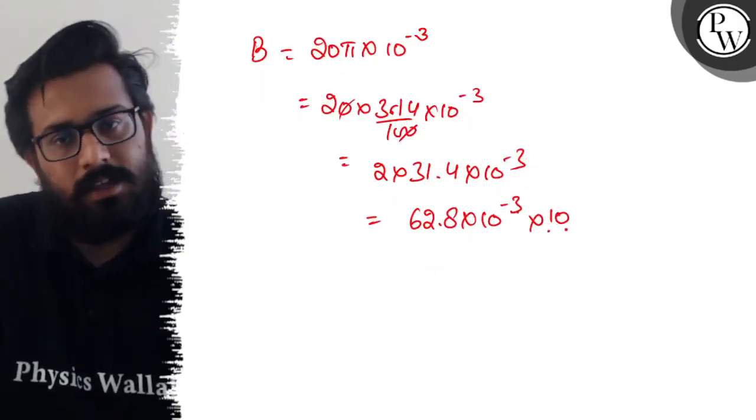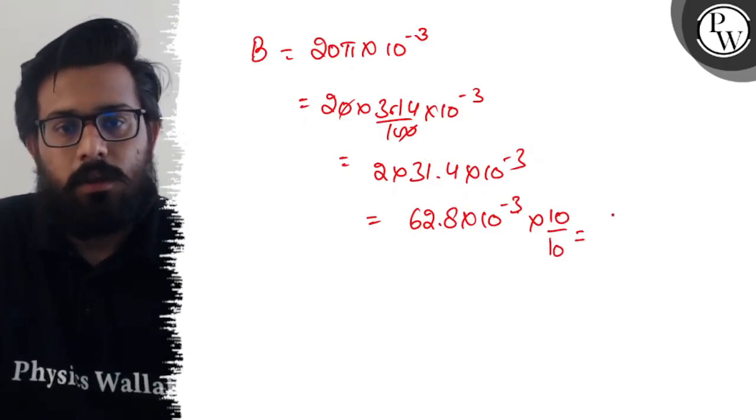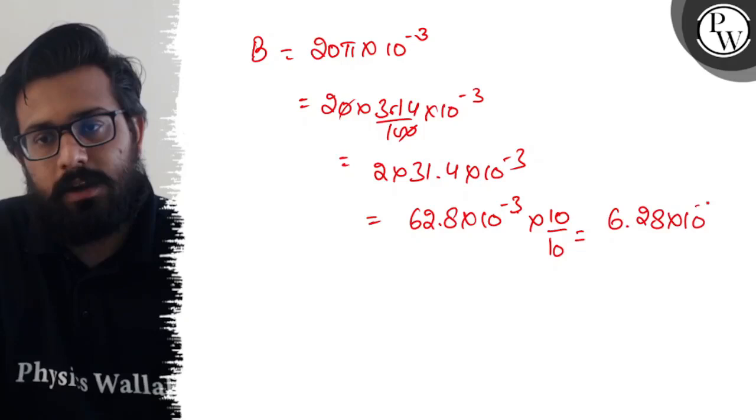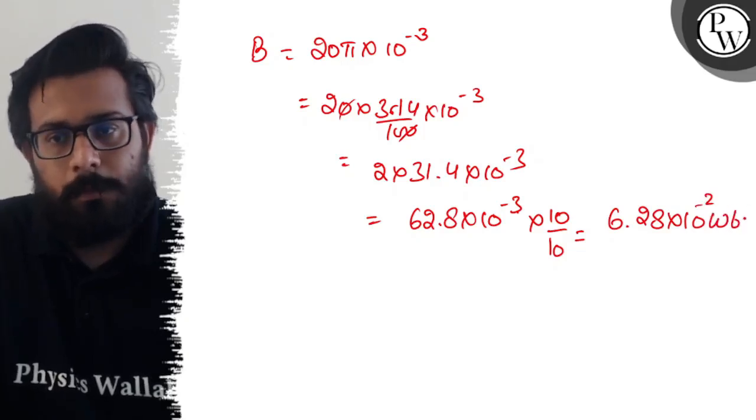You will get a value of 6.28 × 10^-2 Weber per meter square.